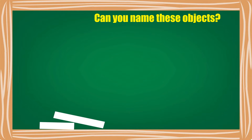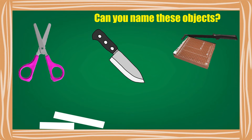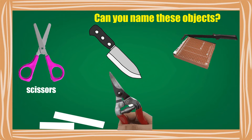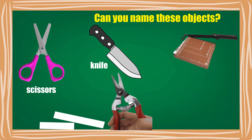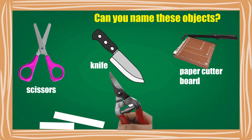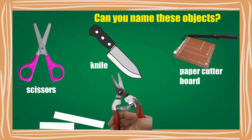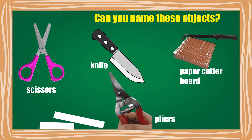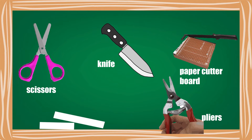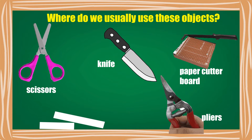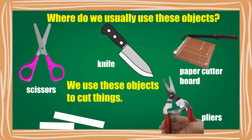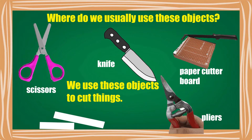Can you name these objects? This is a Scissors. This is a Knife. This is a Paper Cutter. This is a Plyer. Where do we usually use these objects? We use these objects to cut things.